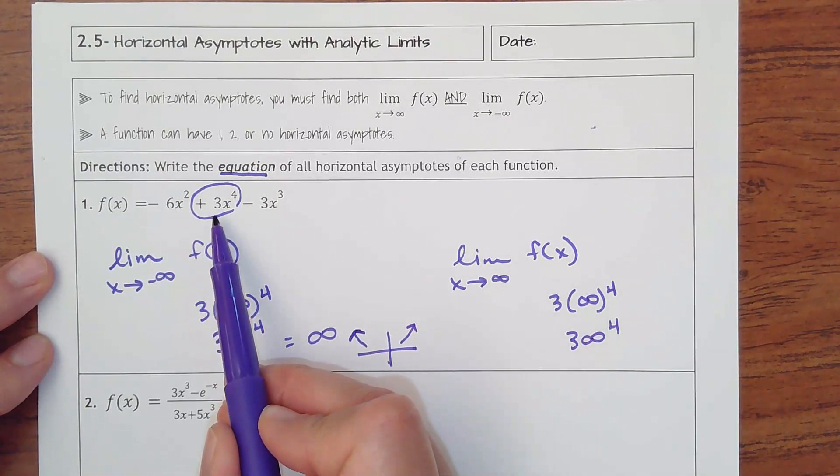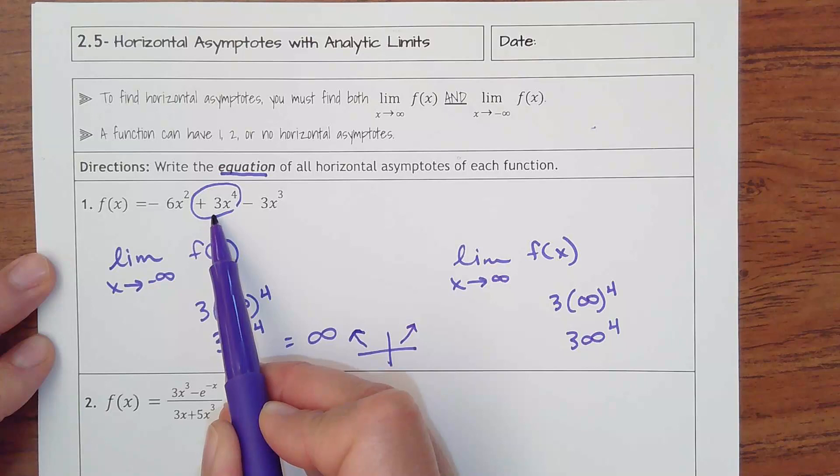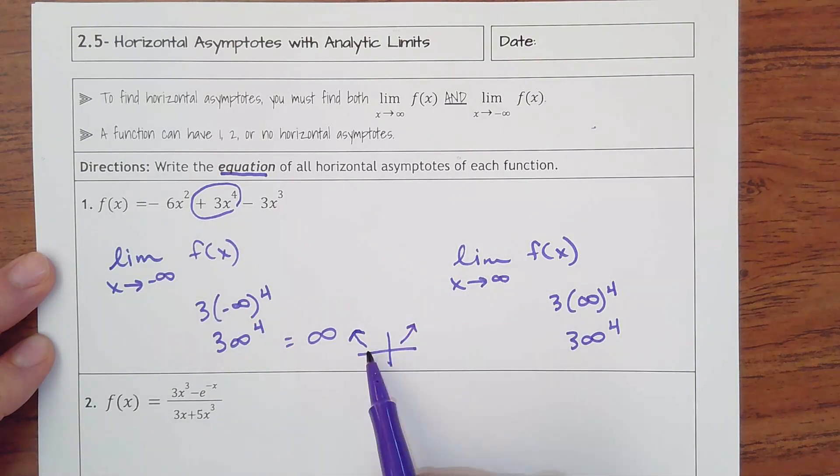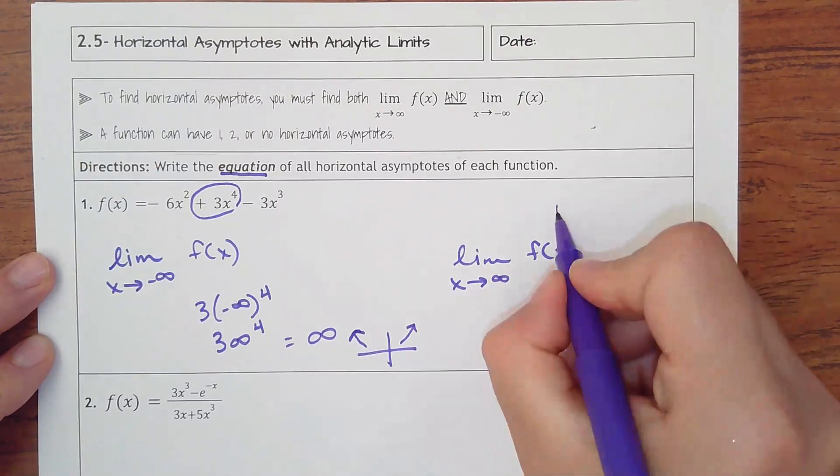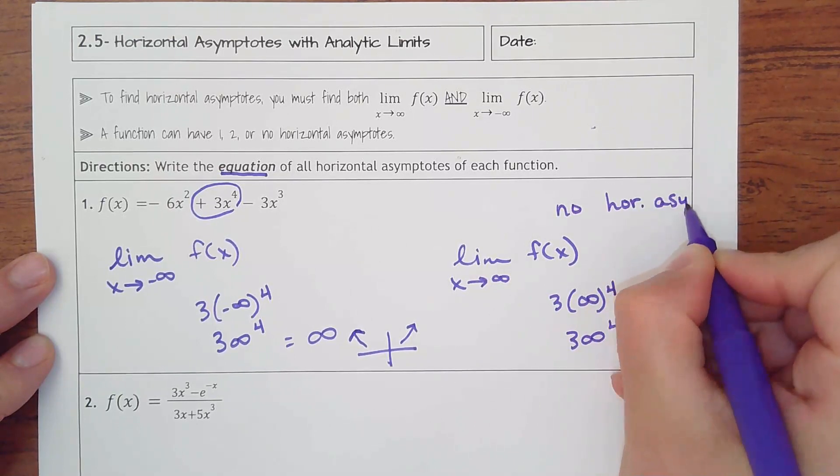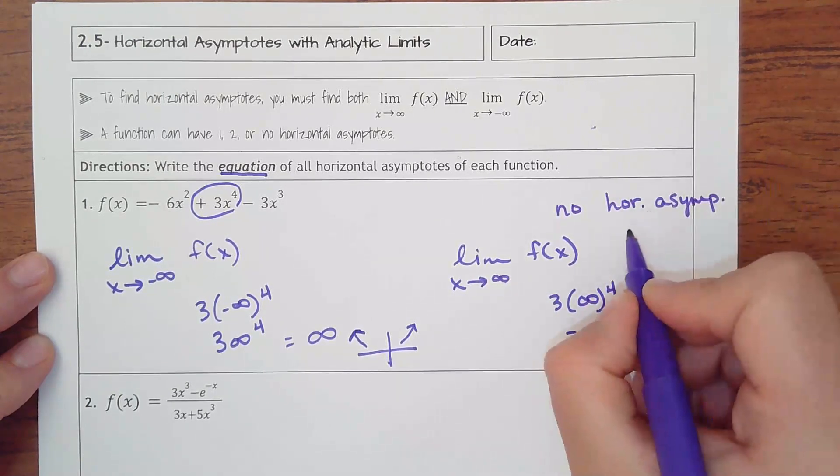All you really need to know is that this is a polynomial, and it follows that end behavior. This is an even function, and it's a positive leading coefficient, so both ends are up. So you really should know ahead of time, hey, there's no horizontal asymptotes with polynomials.